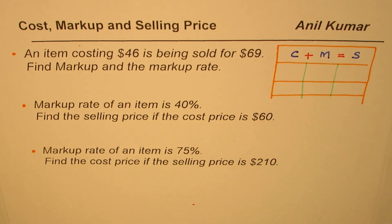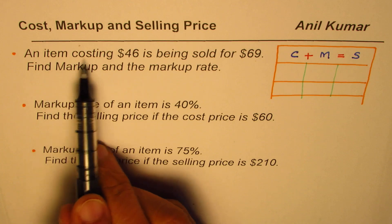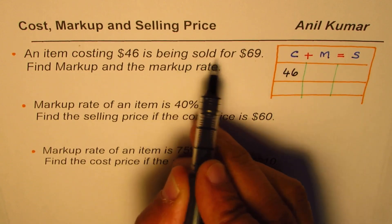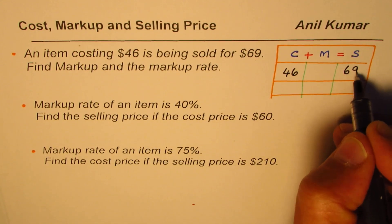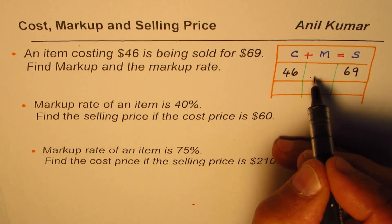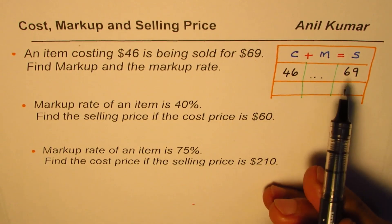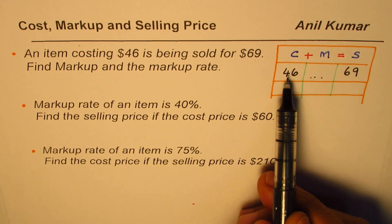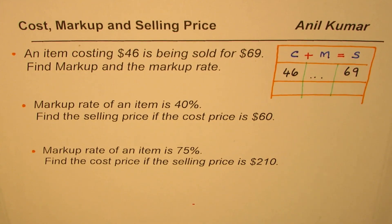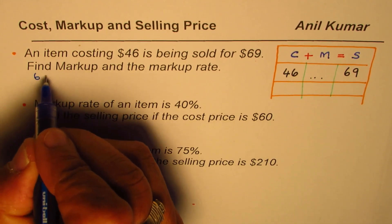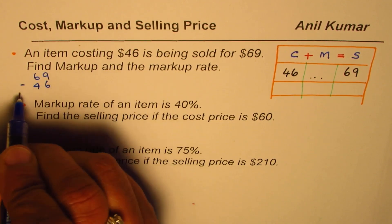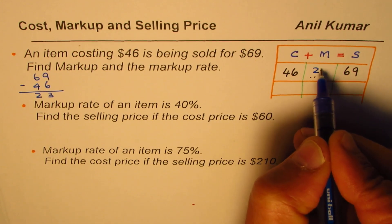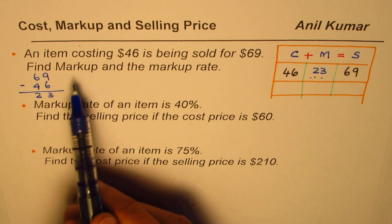We are given an item whose cost is $46, and it is being sold for $69. We need to find the markup. Clearly, cost plus markup equals $69, so markup is $69 minus $46. So we calculate $69 take away $46, which gives us $23. So $23 is the markup.